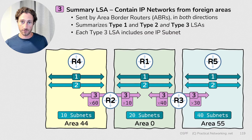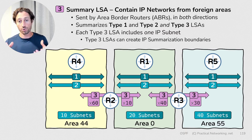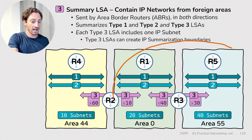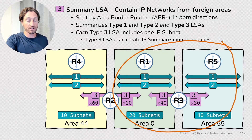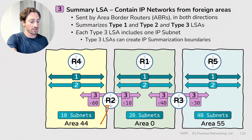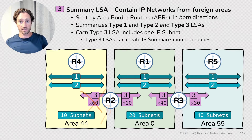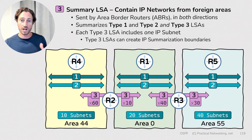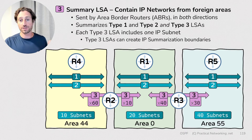Now, I did say by default. These Type 3 LSAs actually create the perfect opportunity for IP summarization. We'll be getting into IP summarization later in this series, but if all of the IP subnets in Area 0 and Area 55 happen to fall into the same slash 16, we can tell Router 2 to not send 60 Type 3 LSAs, but instead send a single Type 3 LSA reflecting that slash 16. That concludes everything we wanted to mention about Type 3 LSAs.